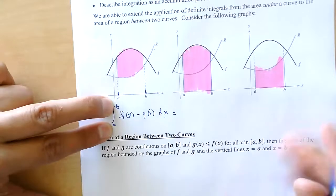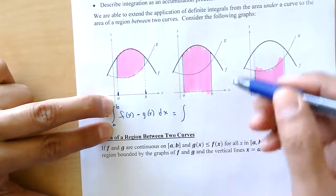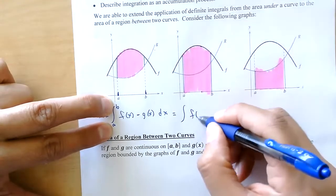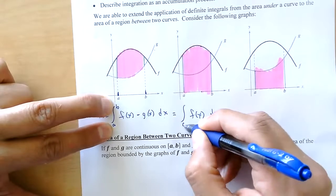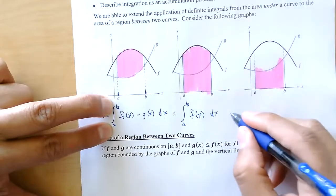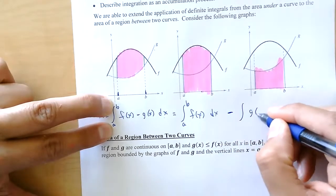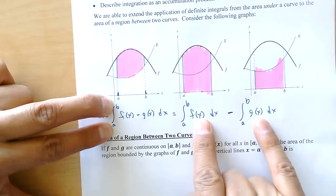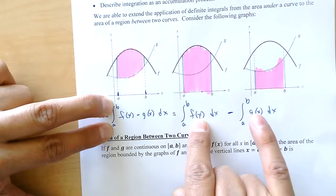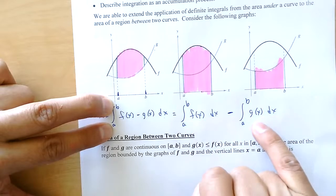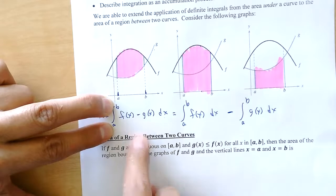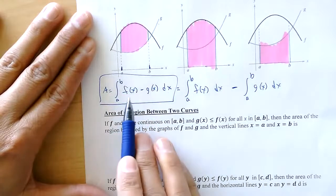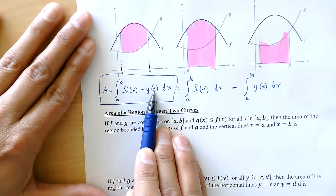Here's why this works: when you integrate, you can find the area from function f down to the x-axis by integrating f of x dx — that gives you the entire area. Then we subtract the area under g of x from a to b. Using properties of integrals, the integral of f of x minus the integral of g of x can be written as a single integral. That's what we do today: subtract the functions, then integrate.